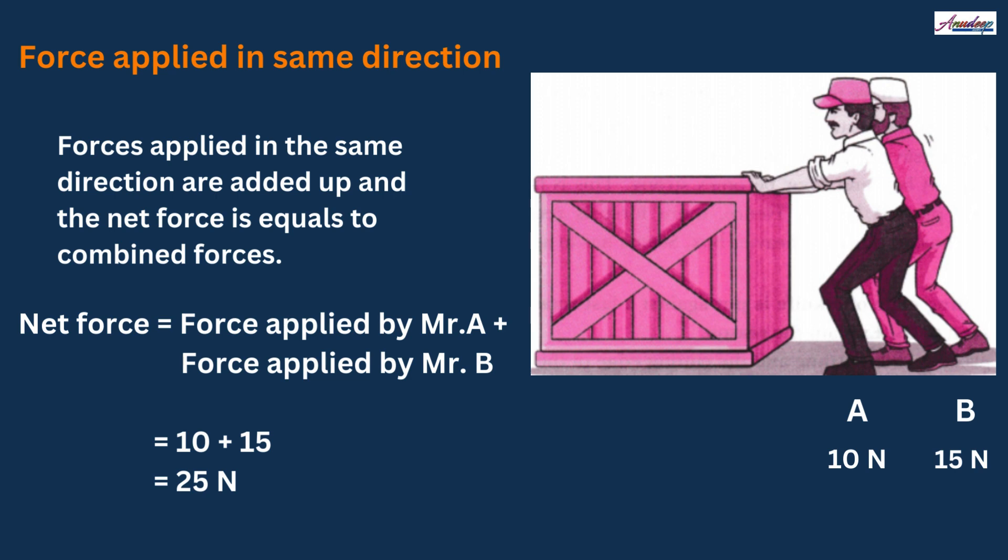So here the force is applied in the same direction by two persons to move a heavy box. In this case, the net force applied will be equal to the sum of force applied by both the persons. For example, in this figure, if Mr. A applies the force of 10 Newton and Mr. B applies the force of 15 Newton to move this box, then the net force will be equal to the sum of force applied by Mr. A and Mr. B. That is 10 plus 15 equals to 25 Newton will be the net force.